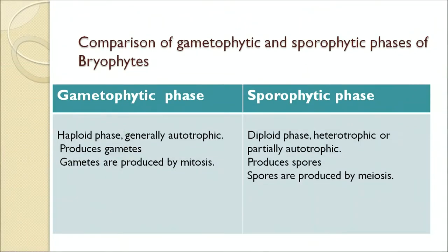Bryophytes are the pioneers of vegetation — they are the first to grow on various habitats like rock, lava, sand, and water, and they act as soil binders. Comparing the two phases: the gametophytic phase is haploid, generally autotrophic, produces gametes by mitosis; whereas the sporophytic phase is diploid, heterotrophic or partially autotrophic, and produces spores by meiosis. The main difference between these two phases is the process of division — mitosis versus meiosis.